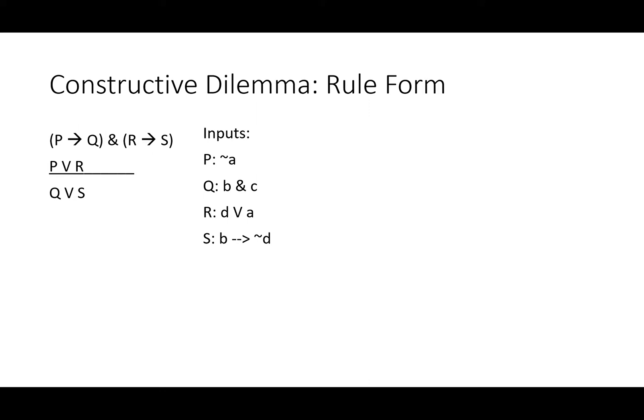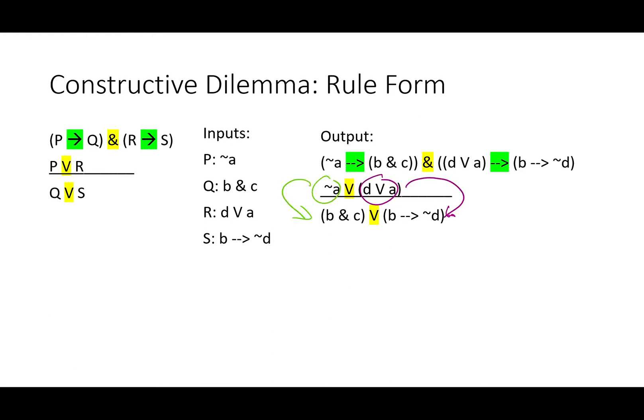You might find it more instructive to use somewhat more complicated inputs. Let's do not A for P, B and C for Q, either D or A for R, and if B then not D for S. You're going to get a huge mess. However, constructive dilemma is going to help you sort out that mess and see the connections between things a little bit more clearly. Note our main conditionals: ampersand and two V's in the first line, the next sub-operators are arrows. This rule form tells us that despite how messy this is, we know that not A is going to lead you to B and C, and that either D or A is going to lead you to if B then not D. We also know that you're choosing between those two beginnings, not A and either D or A, so you're going to get one of those two endings.